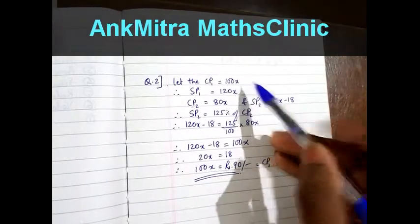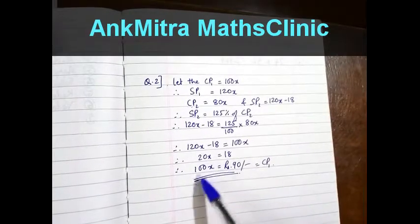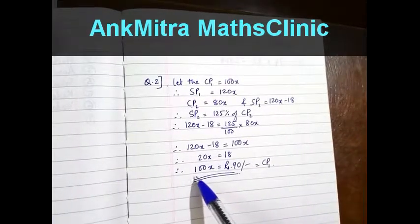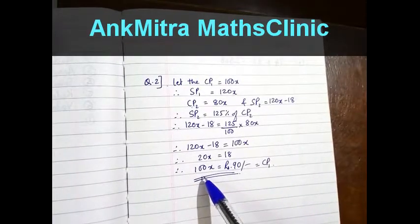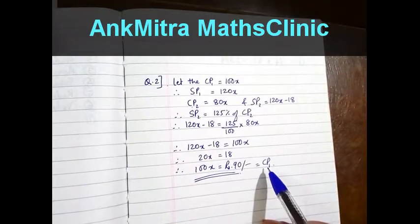We need to find the original CP, that is 100x. Multiplying the equation by 5, we get 100x is equal to Rs 90, which is the original cost price.